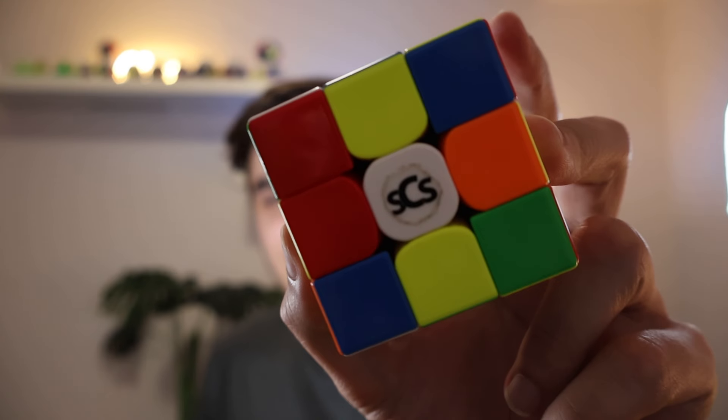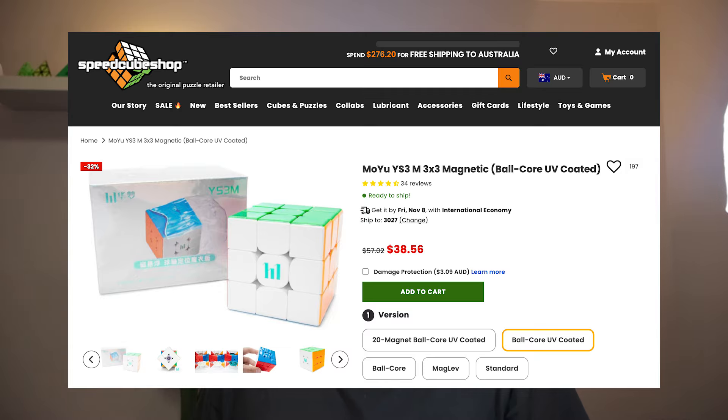I used this cube right here. This is the Ball Core YS3M. It's so good, man, you gotta get it. I've used this to break like every one of my records. It's just perfect. You can get it from Speedcube shop using my code to make it even cheaper. Just saying.